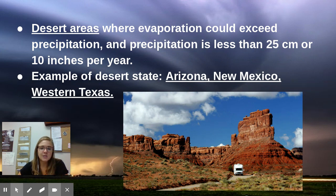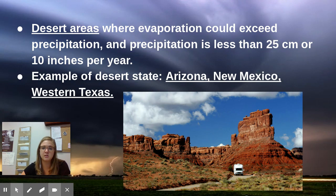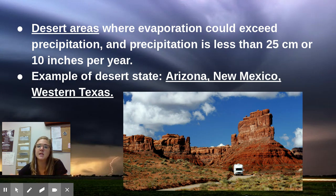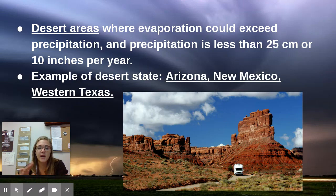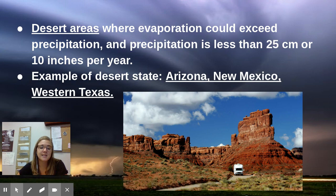Next, the desert climate zone is where evaporation can exceed precipitation — meaning water evaporates or dries up faster than it falls down, making the area very dry almost all the time. Precipitation or rainfall is less than 25 centimeters or 10 inches per year. Some examples would be West Texas, Arizona, and New Mexico — very dry climate with not a whole lot of tall trees, meaning not a whole lot of water in that area either.